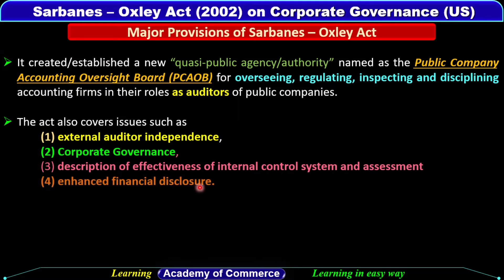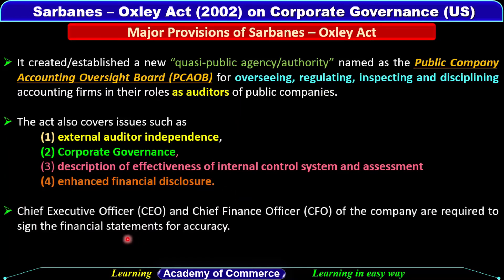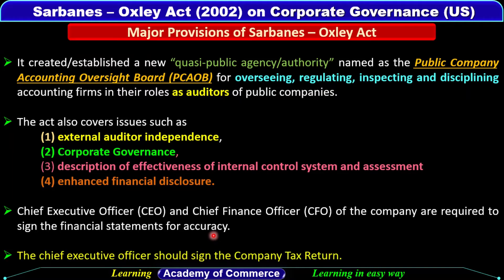Enhanced financial disclosure is another provision. Financial disclosure was required even before this Act, but since major scandals were still occurring, the financial disclosure aspects were enhanced. Under this Act, the Chief Executive Officer and Chief Financial Officer of the company are required to sign the financial statements for accuracy. Additionally, the CEO is also required to sign the company's tax return.